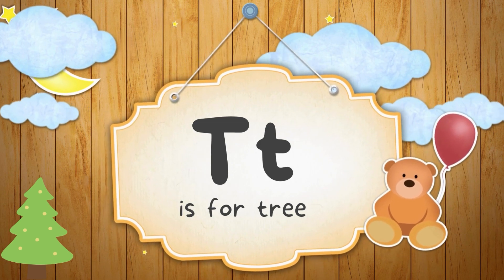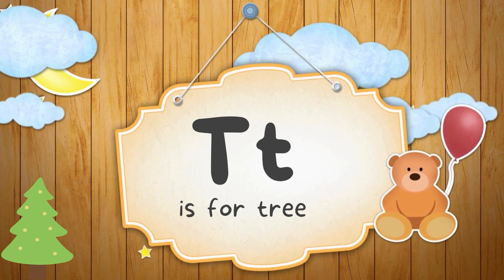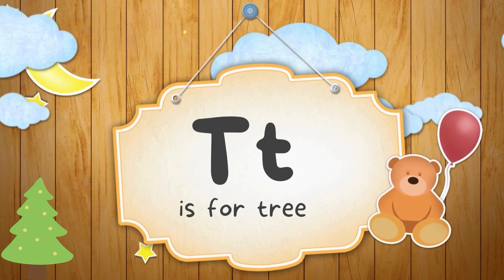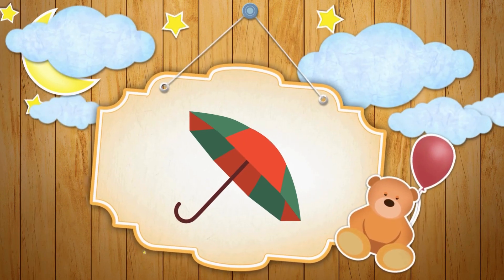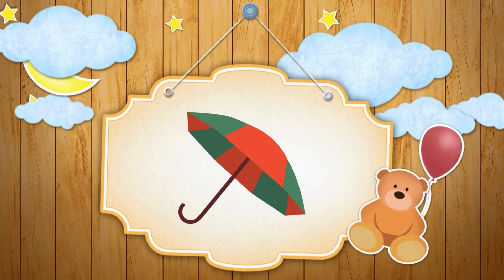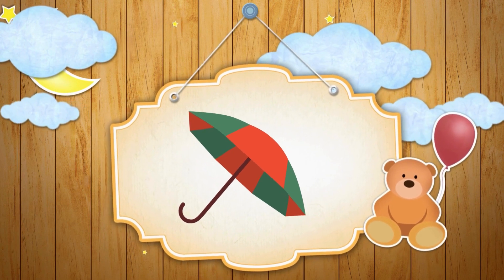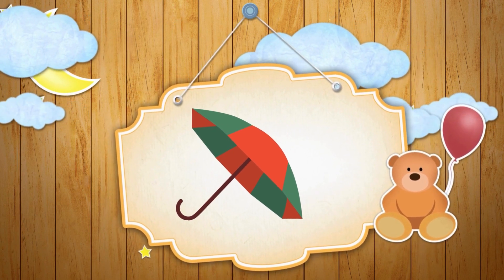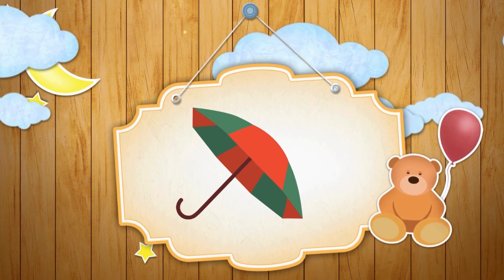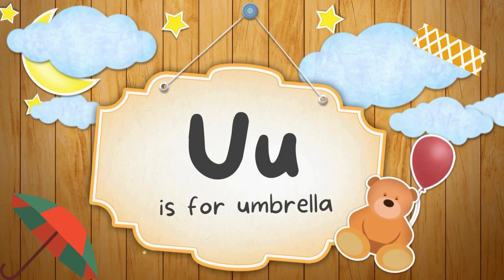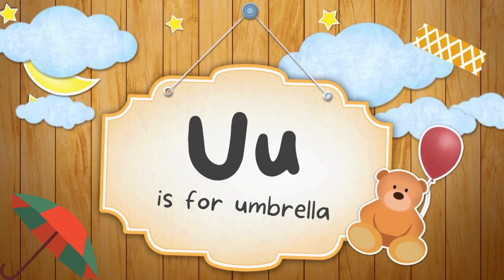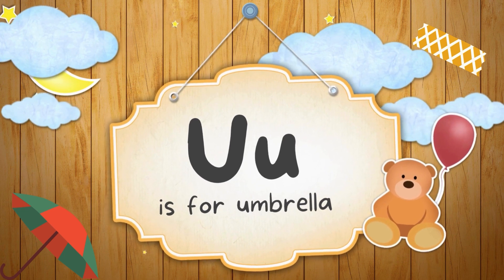T is for Tree. See the image and guess the alphabet. U is for Umbrella.